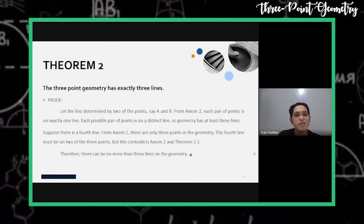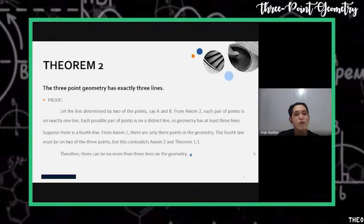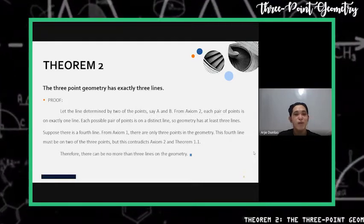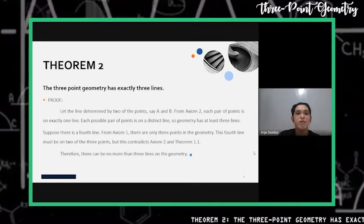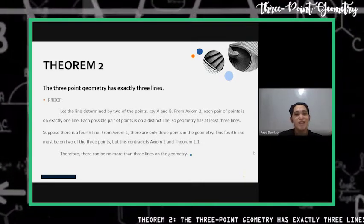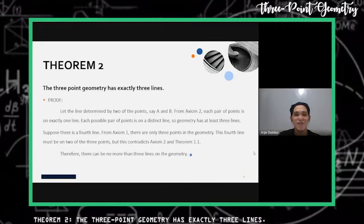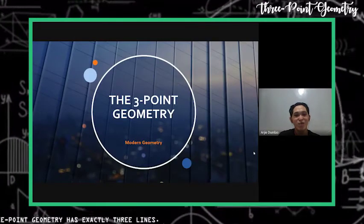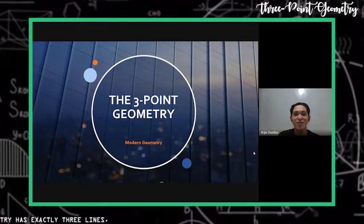Therefore, we conclude that there can be no more than three lines in the geometry. That's how you show some basic proof about theorem two. Thank you so much. That's for the three-point geometry.